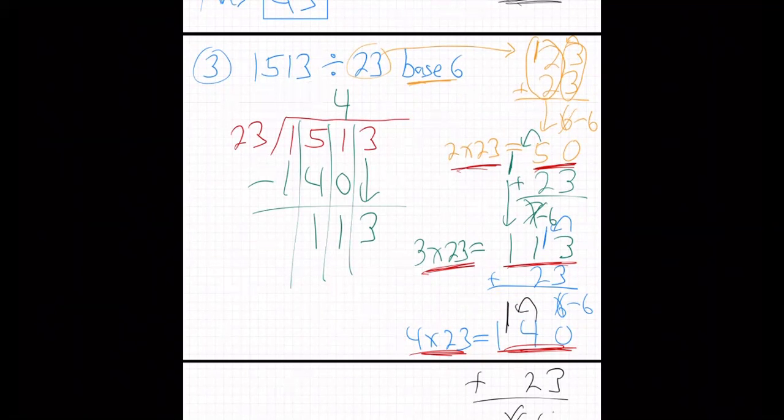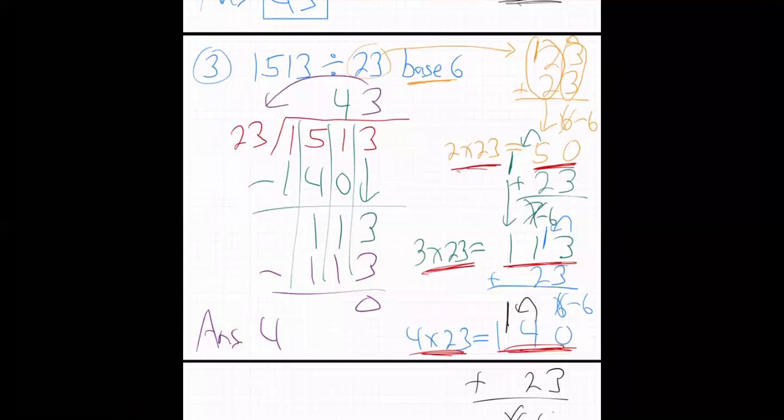How many times is 23 going to 113? Yeah, we're seeing that right here, three times 23 is 113. Three times 23, 113, subtract, done, answer, 43. There it is, we got it.